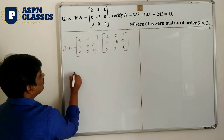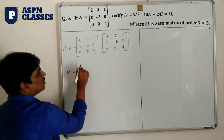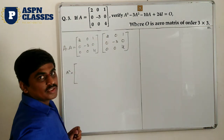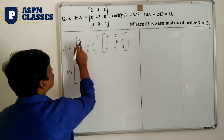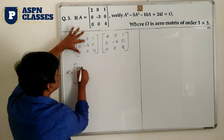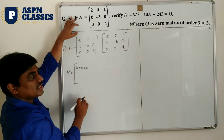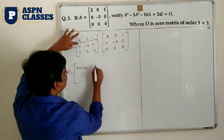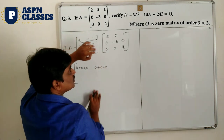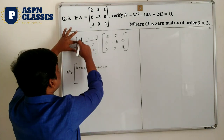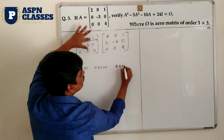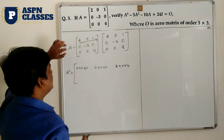These two are the A matrix. After multiplying, you get A square. First row multiplied by first column: 2×2=4, 0×0=0, 1×0=0. First row multiplied by second column: 2×0=0, 0×(-3)=0, 1×0=0. First row multiplied by third column: 2×1=2, 0×0=0, 1×4=4.